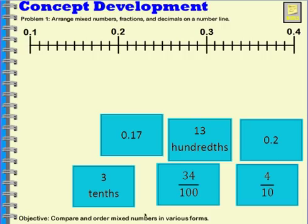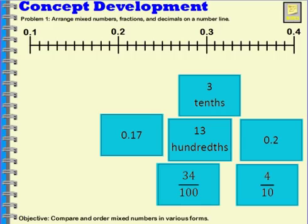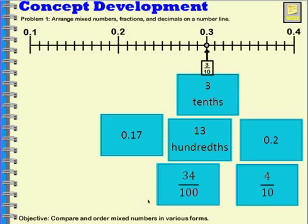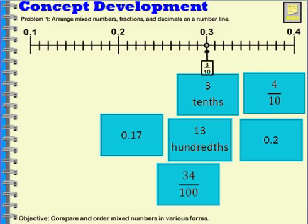So this one actually says 3 tenths. I'm going to start with that one. 3 tenths would be about here on our number line and I'm going to show that with a fraction. So 3 tenths is here. Let's try another one. I see 4 tenths right here. So I'm going to put 4 tenths here and I'm going to mark it as 4 tenths as a fraction as well. Okay, so those two cards are in the right place.